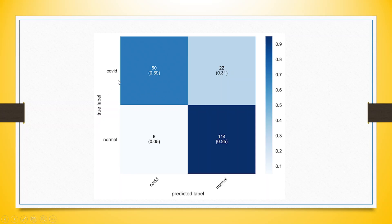A patient is having COVID or is normal, and we are having a COVID kit to predict whether a patient is having COVID or not. Our success is that the patient is having COVID and the kit also predicted it — 50 are such cases where our prediction is correct. Similarly, a patient was normal and the COVID kit also detected that the person is normal, so there are 114 such cases where the prediction is accurate.